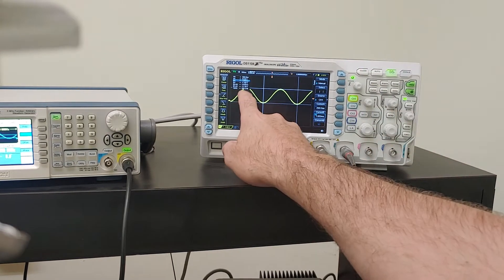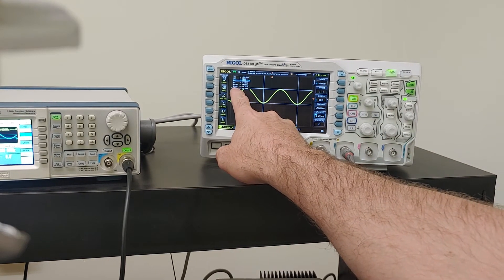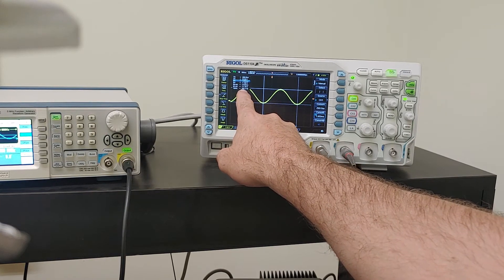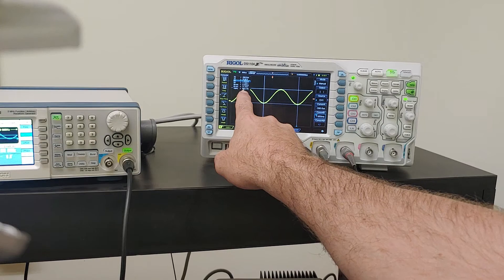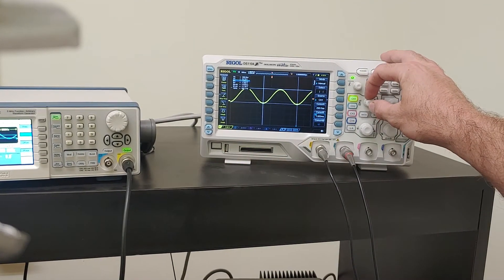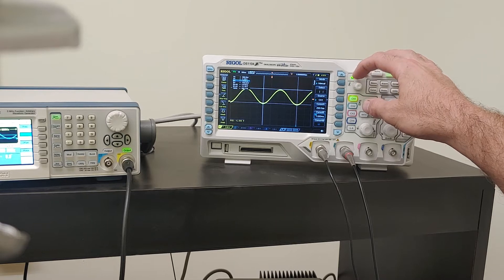And this says that my delta X is 2.53 milliseconds or 395 hertz. Turns out that it's actually 400 hertz. And so there's just a little bit of differentiation between what I did here. Let me bring that in just a little bit right there.